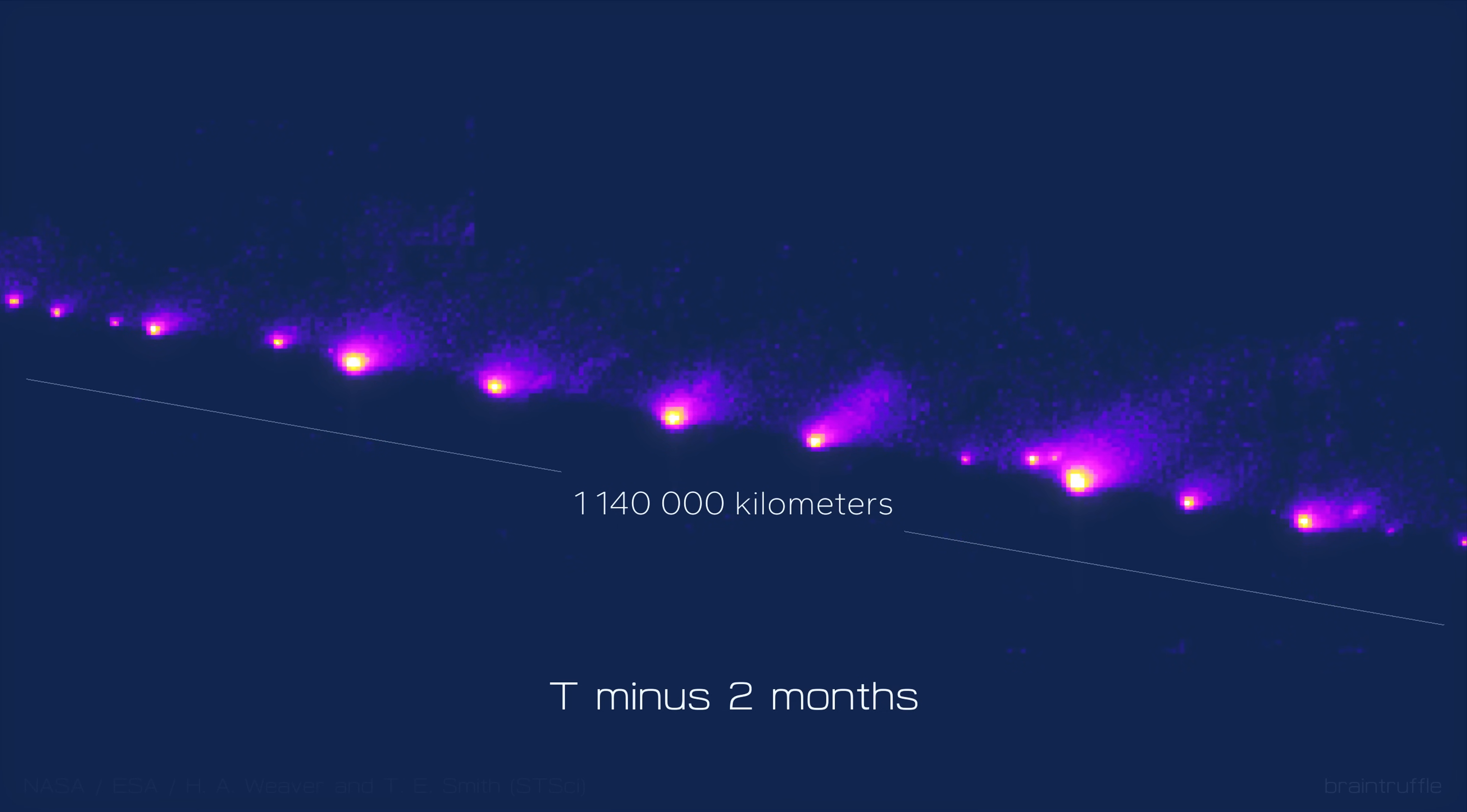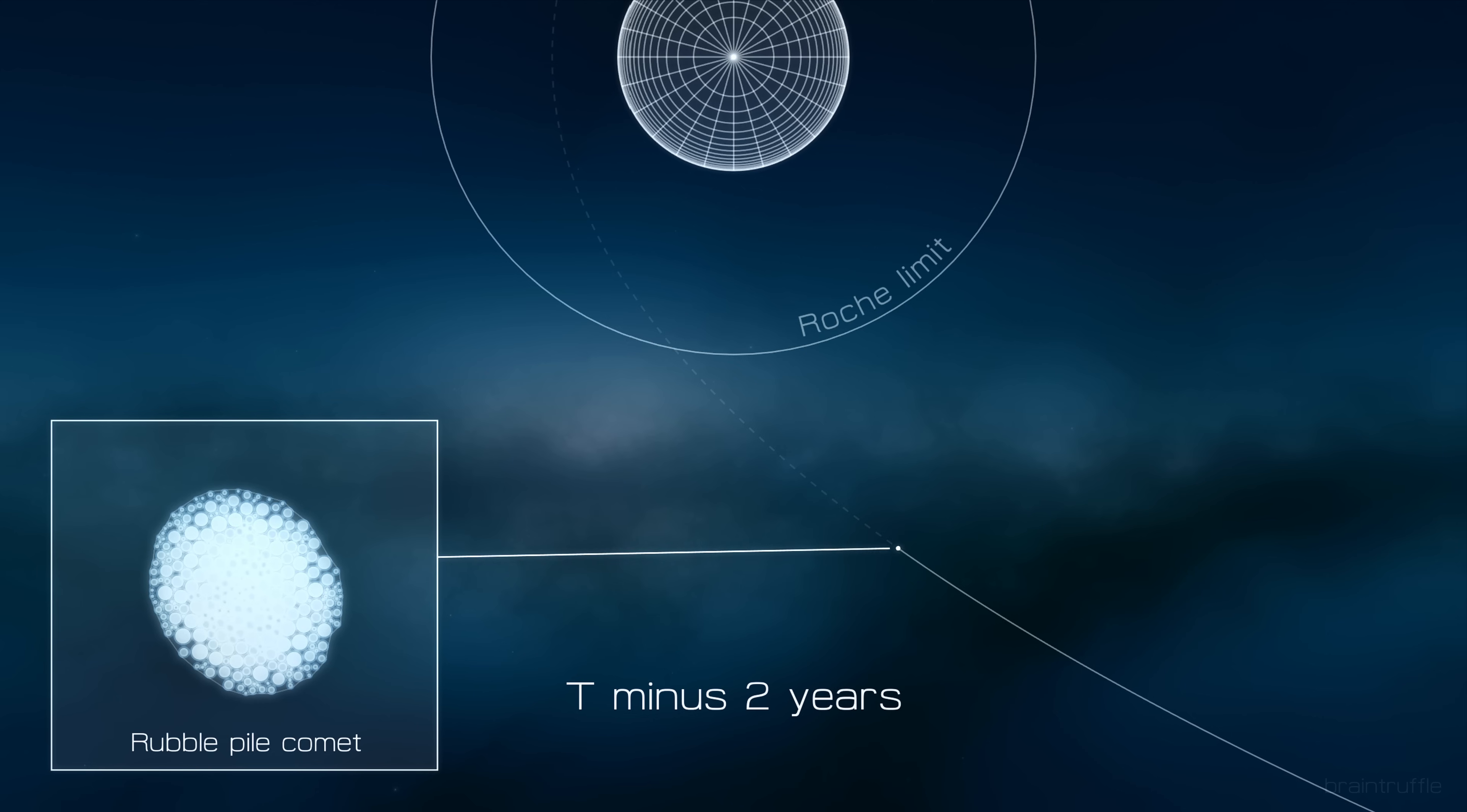Calculations backward in time showed that, two years before impact, a larger comet passed Jupiter's Roche limit. That's when Jupiter's gravitational falloff across the comet is strong enough to break it.